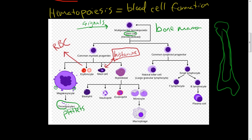The common myeloid progenitor can also be turned into a myeloblast, and this myeloblast can give rise to four types of white blood cells: a basophil, a neutrophil, an eosinophil, and a monocyte. The neutrophil, if you remember, is the first responder in acute inflammation.